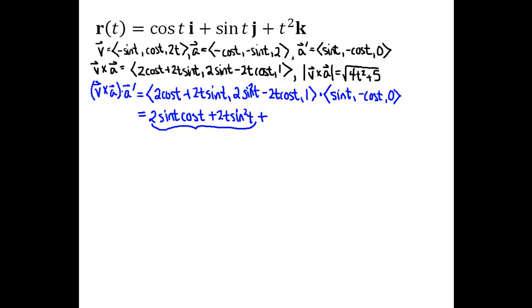And then for the J component functions, I will have plus negative 2 sine T cosine T and then plus 2T cosine squared T. So that's for multiplying the two J component functions together. And then in the K component function, I'll have one times zero, so we'll get zero.